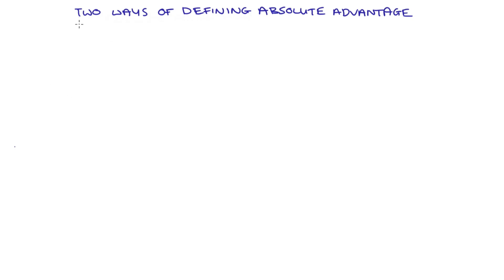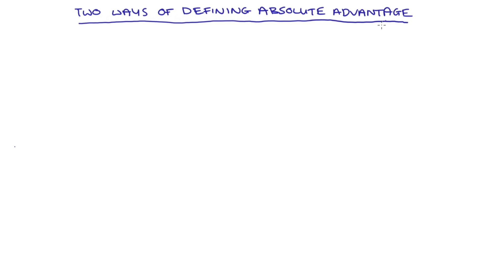Hi everyone. In this video I'm going to be comparing two ways of defining absolute advantage. At the heart of the issue is really whether or not we fix the amount of resources that each of our economic agents have. I'll start with what I think is the more common way of defining absolute advantage.